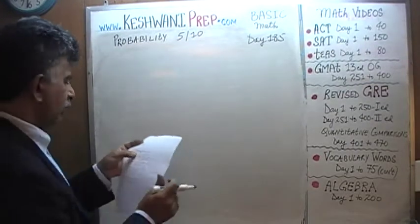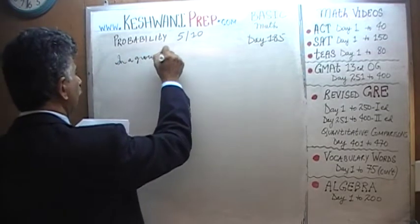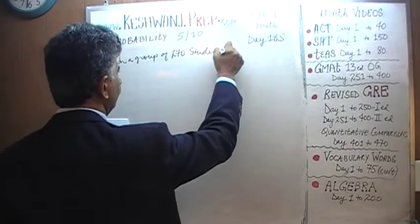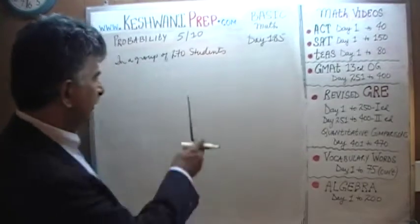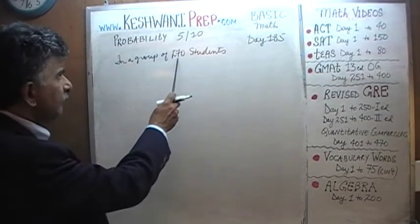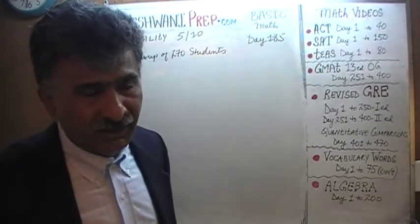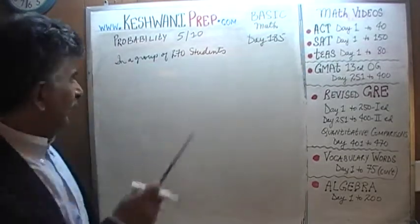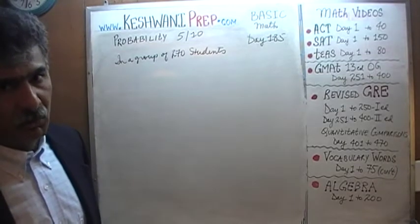We are told that in a group of 270 students. You can tell immediately, even before we read the rest of the problem, that if this problem deals with the notion of probability — if they are talking about the odds of picking this or that — the odds have absolutely nothing to do with how many students you have. That information is superfluous and unneeded.